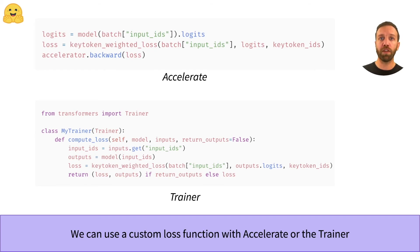For the Trainer, we can override the compute loss function of the standard Trainer. We just need to make sure that we return the loss and the model outputs in the same format.